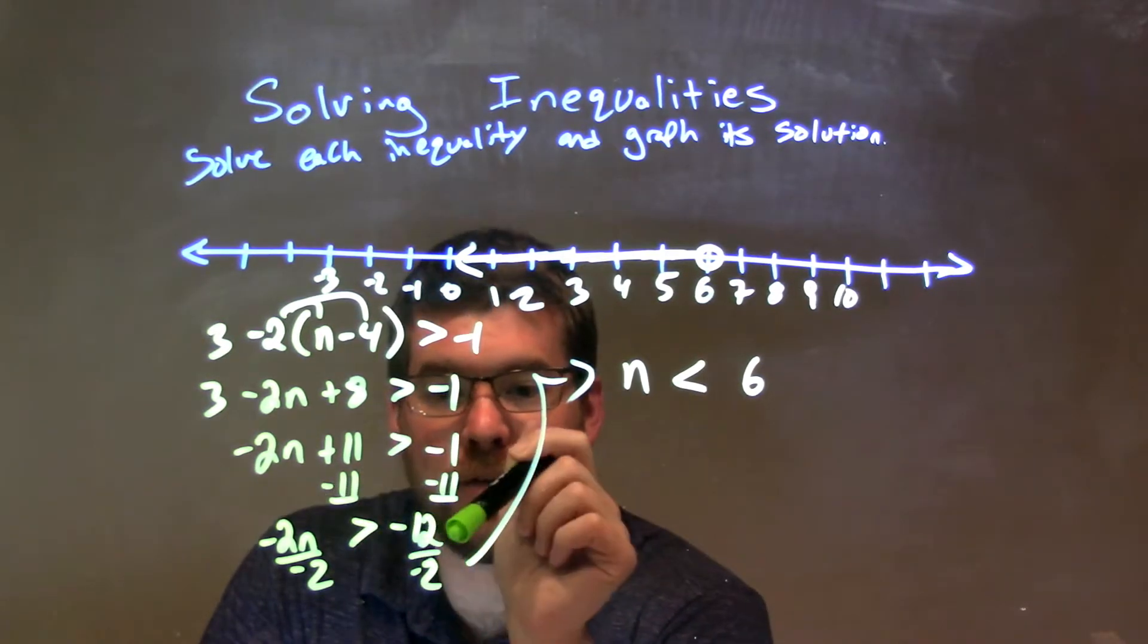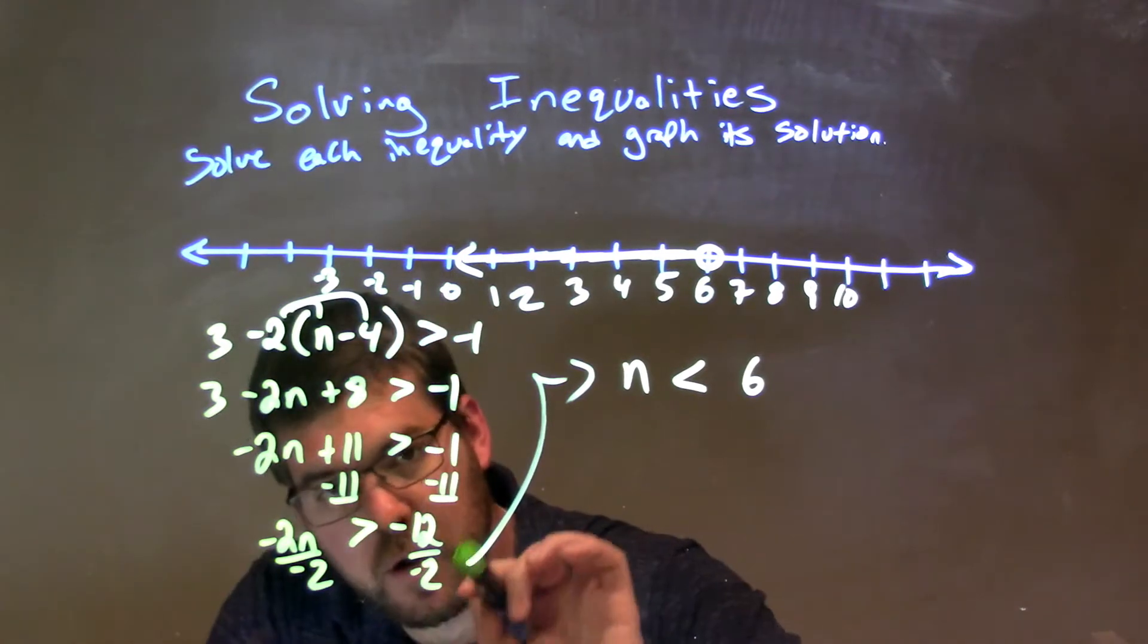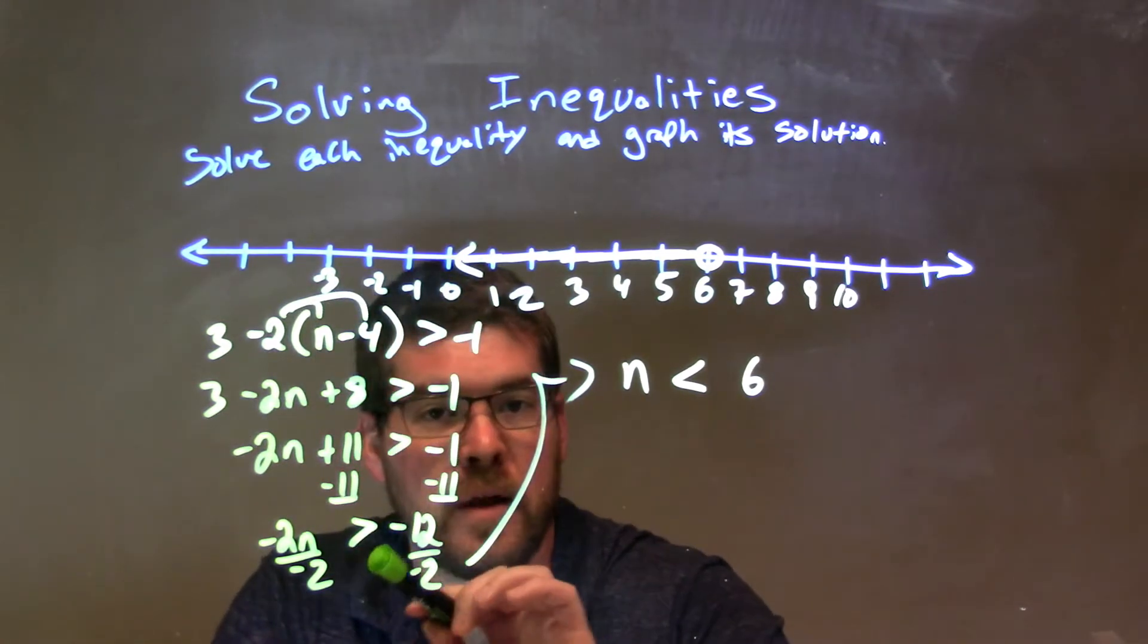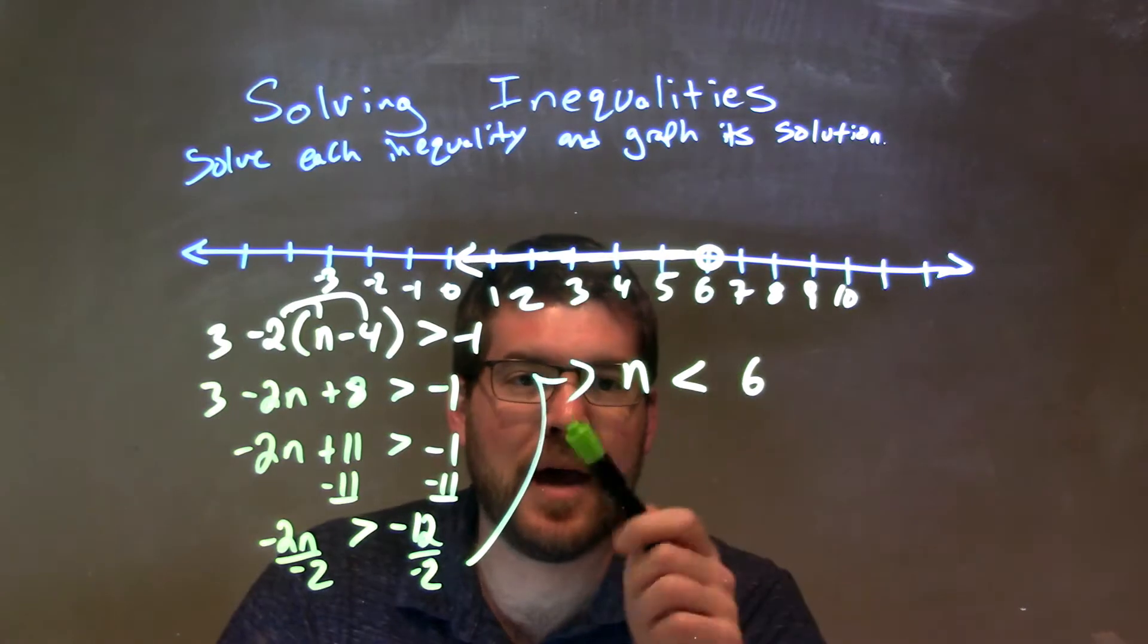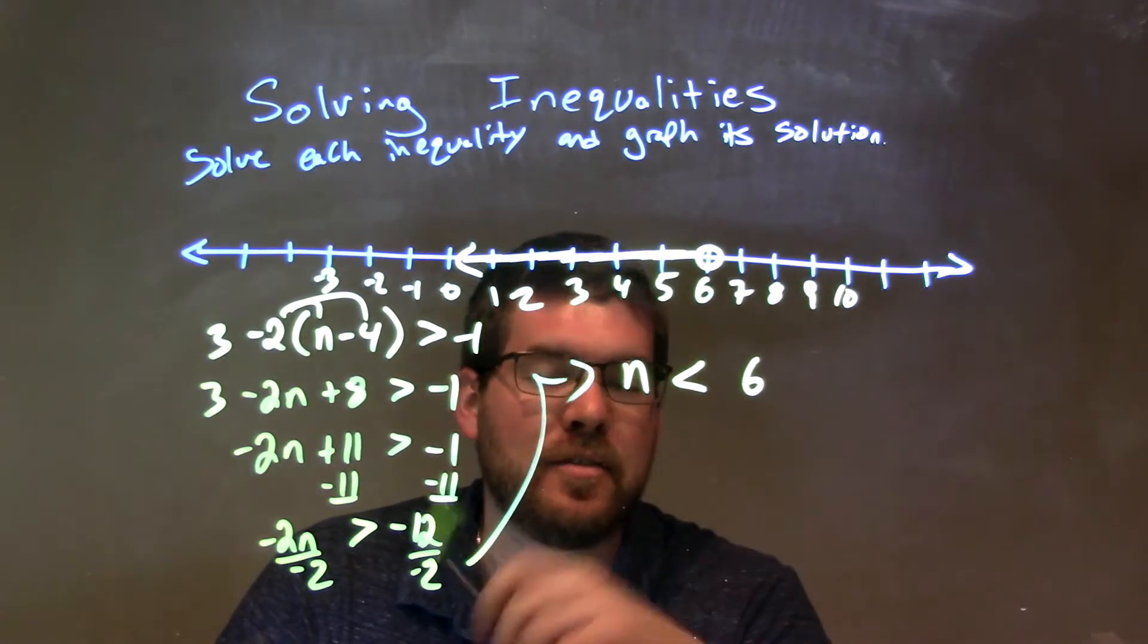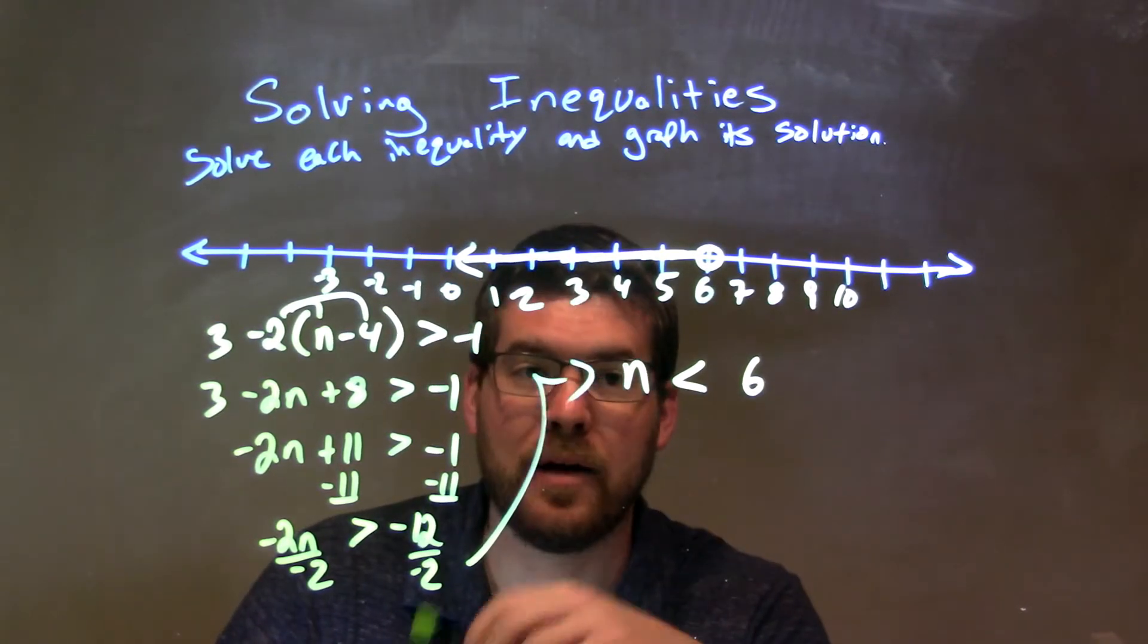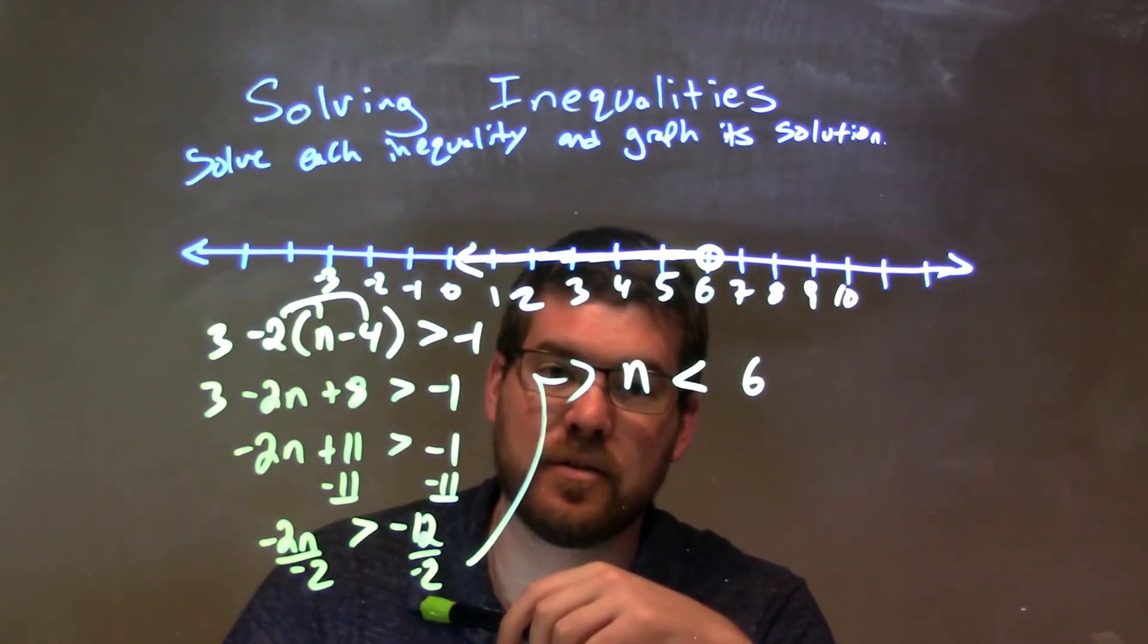Okay? Then, I divided by negative 2 on both sides over the inequality. When we divide by a negative over the inequality, which causes that inequality to flip, and gives me n by itself on the left, and positive 6 on the right. So, now we have n is less than 6.